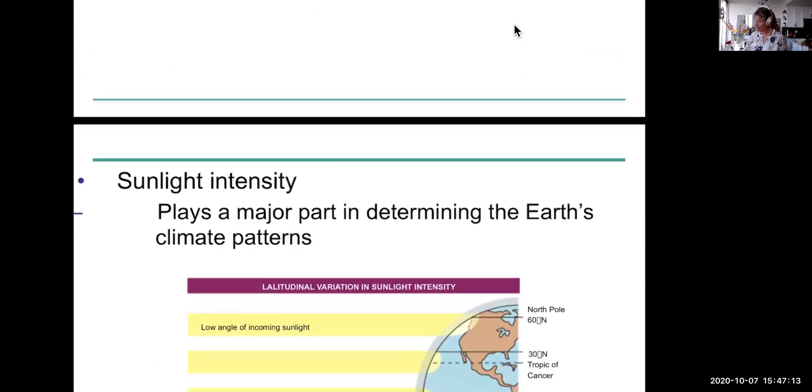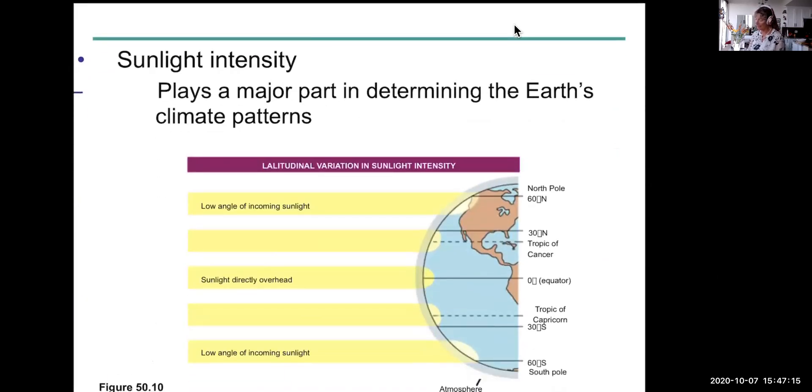So these are global patterns, for example, intensity. When would you expect the sun to be more intense, when it's directly overhead, or when it's at an angle? When would you think the sunlight would be more intense, if it's directly overhead, or if it's at an angle?